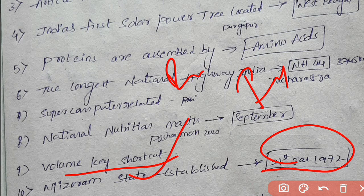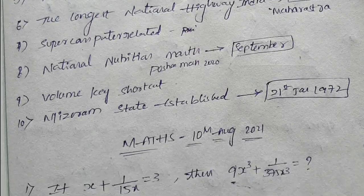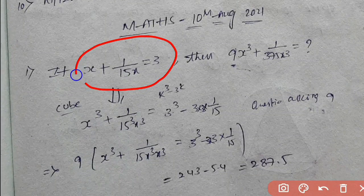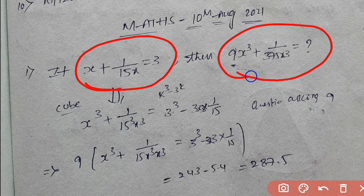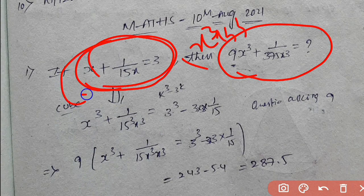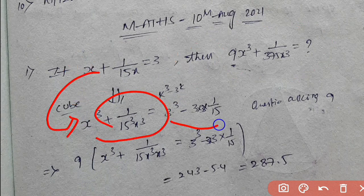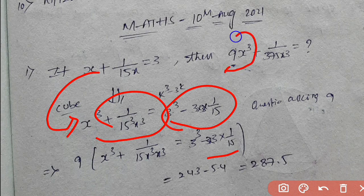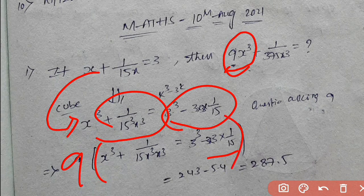Now let's analyze mathematics. First question: x + 1/(15x) = 3, find 9x³ + 1/(3x³). We need to form the cube formula. We will try to solve using k³ - 3k, then multiply both sides to solve for x³.